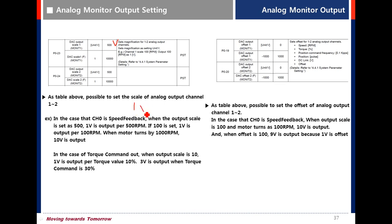1 volt is output. If you change the value to 100, then when the speed reaches 100, 1 volt is output.